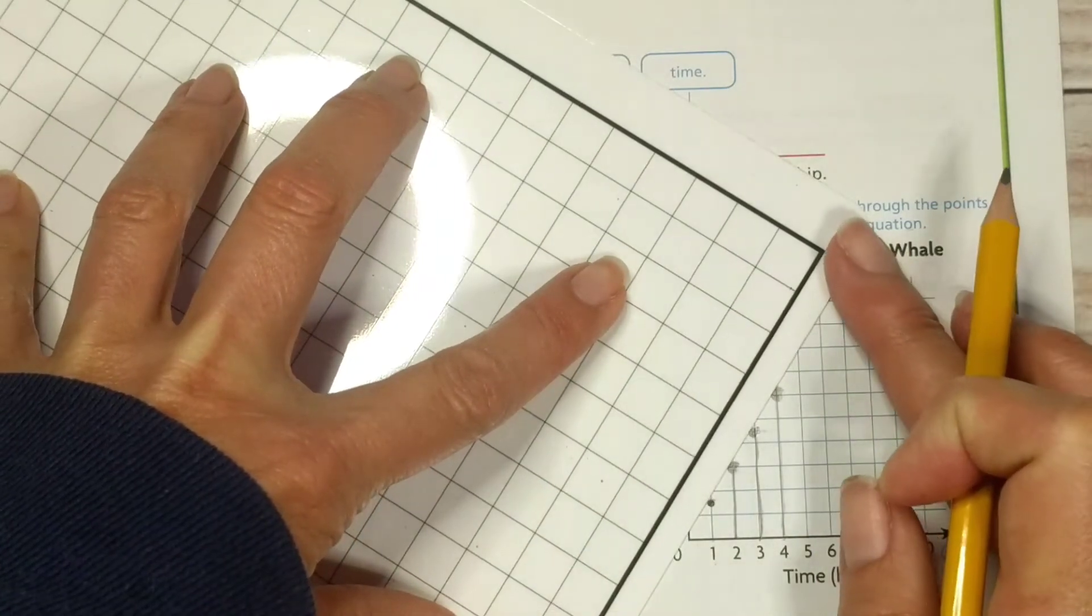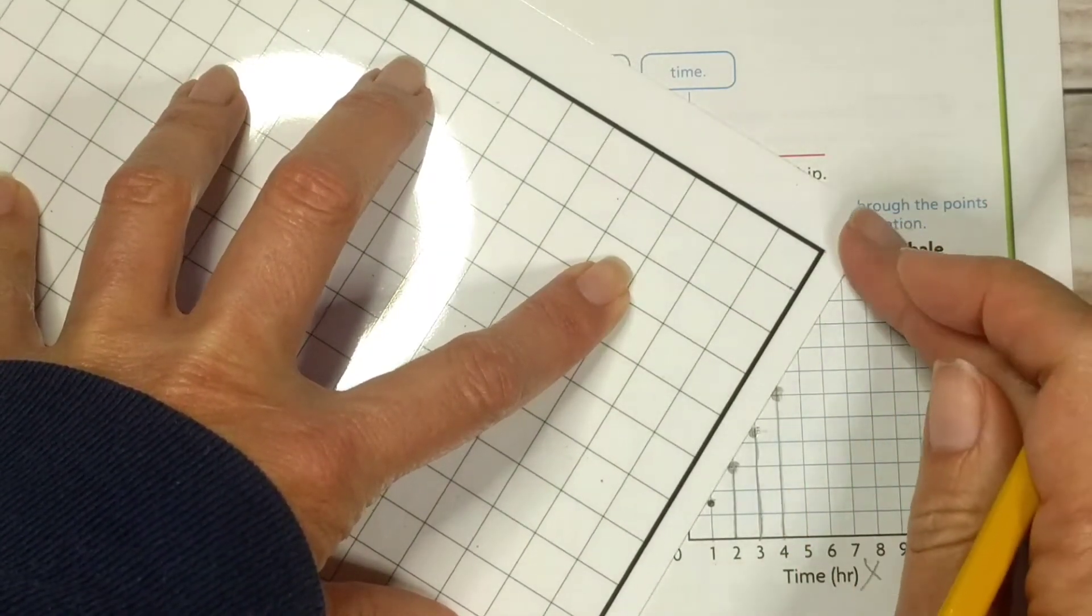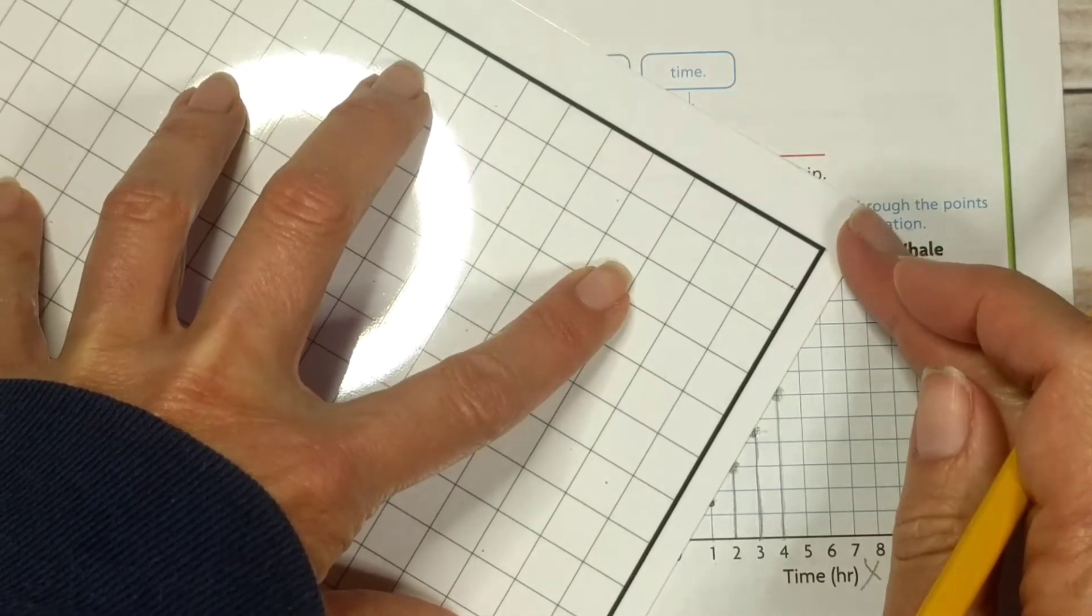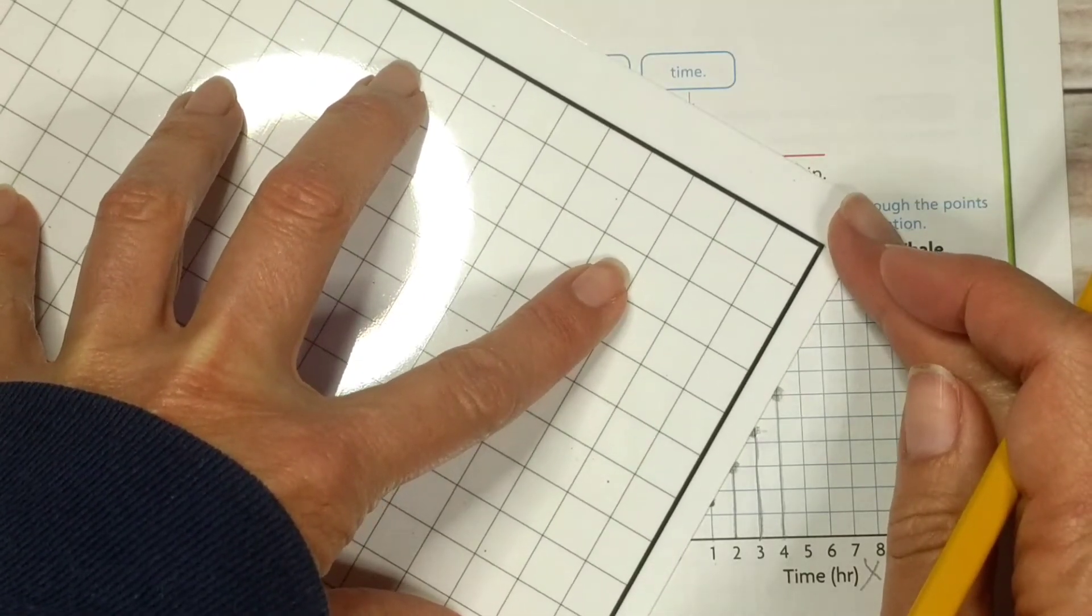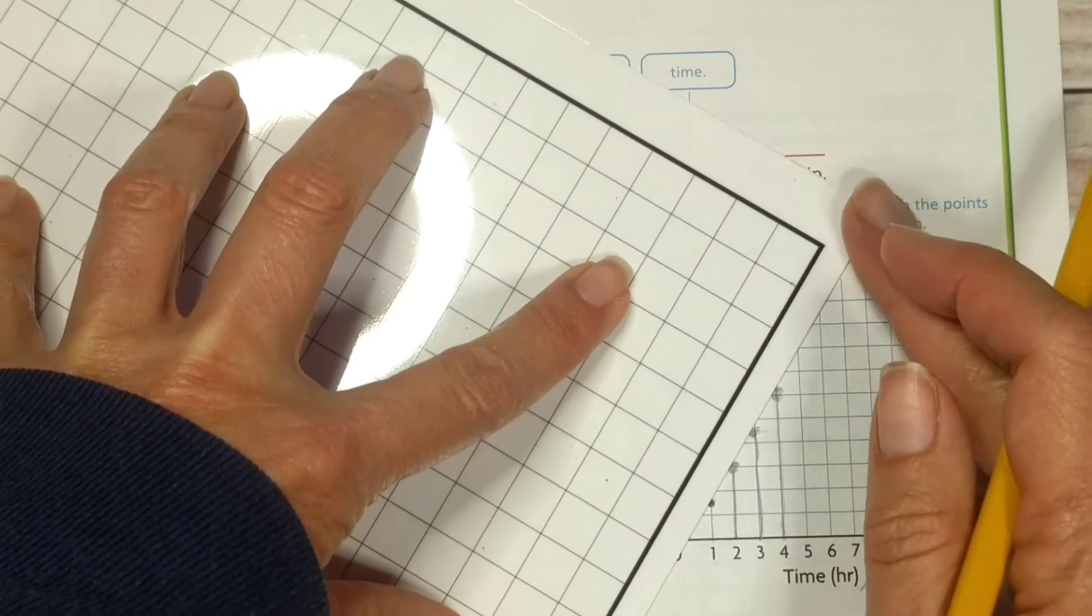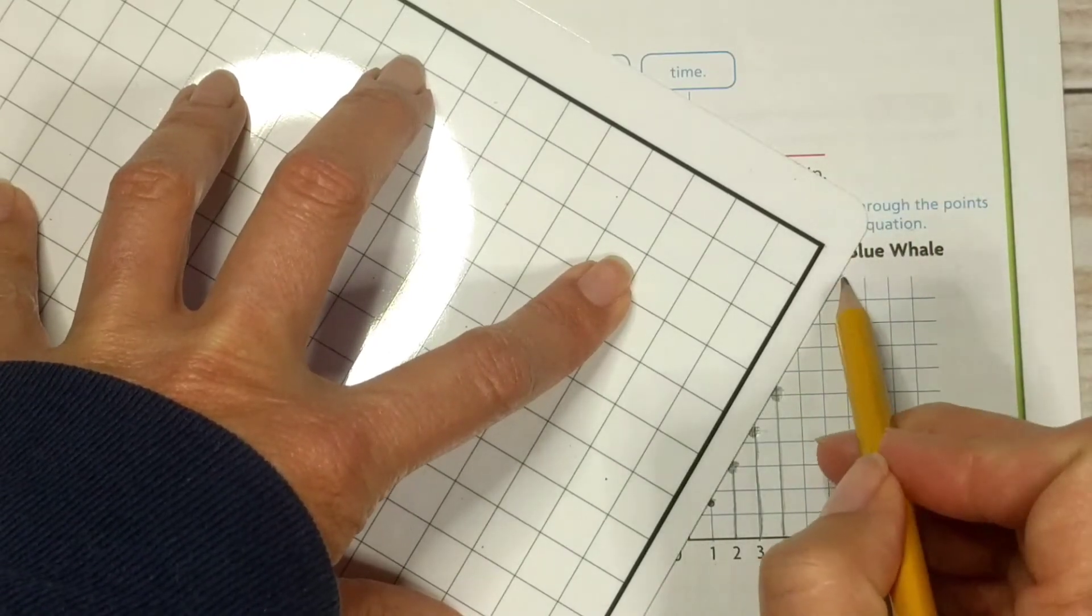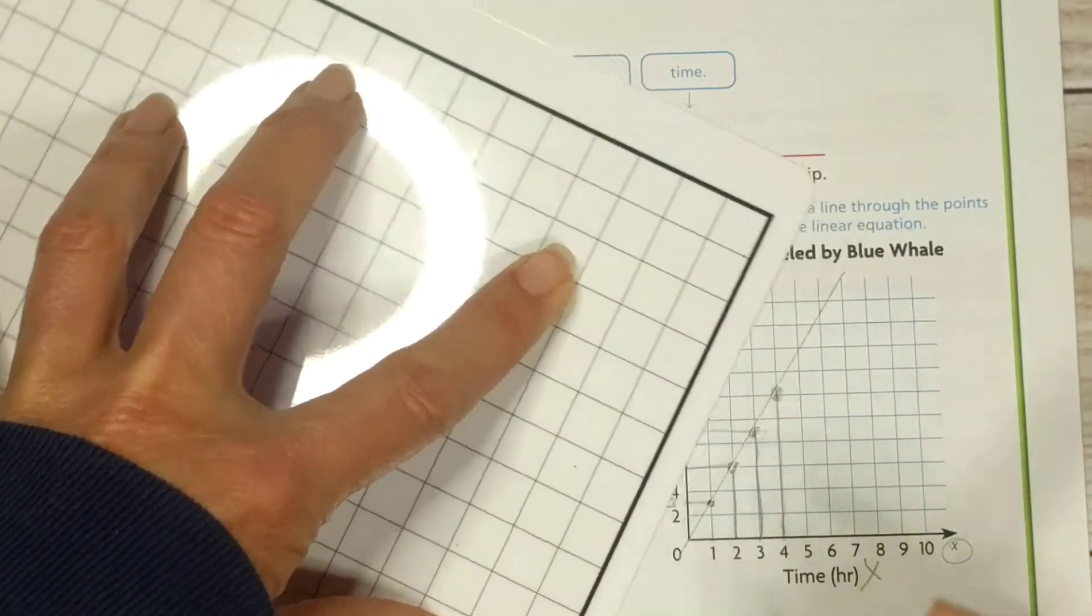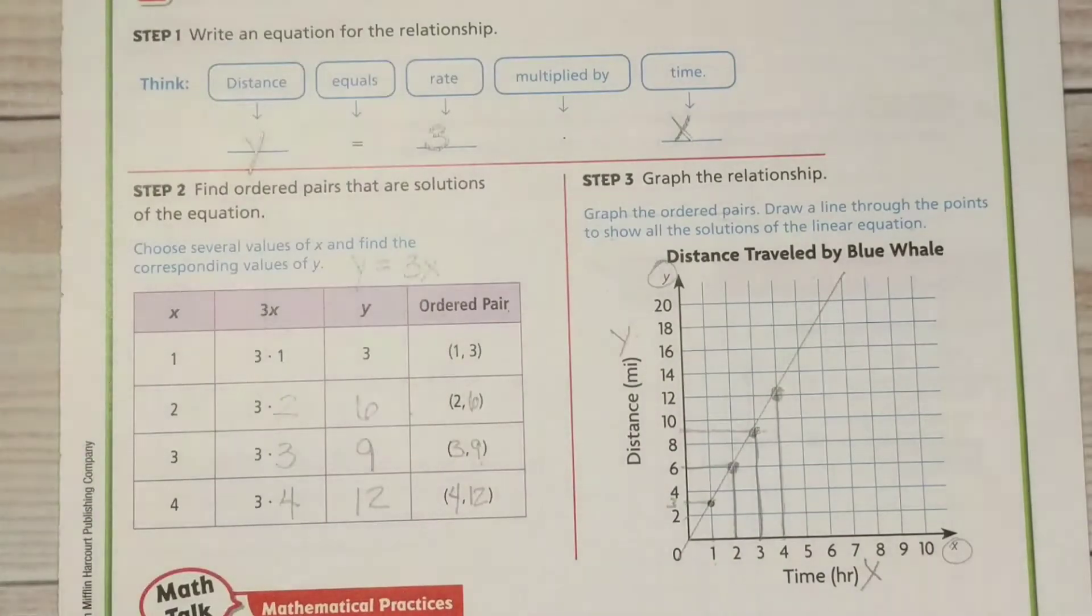All right. Making sure this is nice and straight. I'm still not quite there, but I'm getting there. Let's go ahead and draw the line.